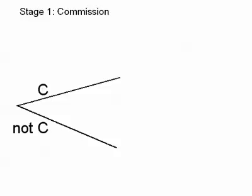The first branch off represents the first stage. The sales representative either gets the commission or does not get the commission. We are given that the probability of getting the commission is 0.4, and therefore by the complement rule, the probability of not getting the commission must be 0.6.